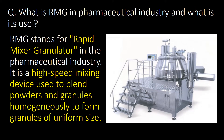Welcome. We will start the series with very basic questions and then go in detail. First question: what is RMG in the pharmaceutical industry and what is its use? RMG stands for Rapid Mixer Granulator in the pharmaceutical industry. It is a high speed mixing device used to blend powders and granules homogenously to form granules of uniform size.